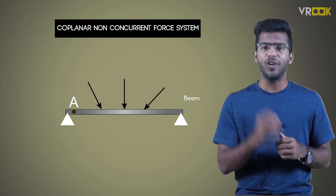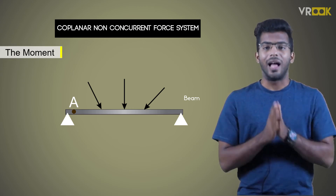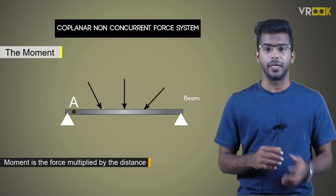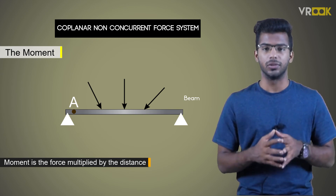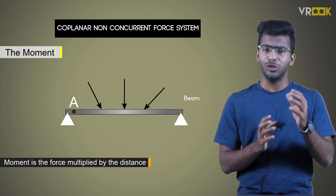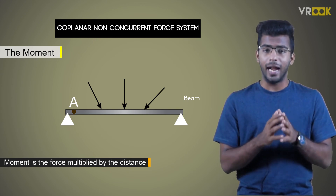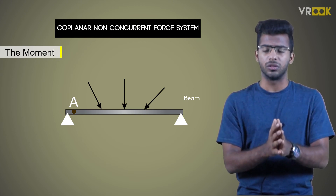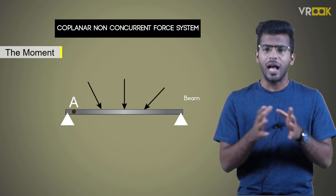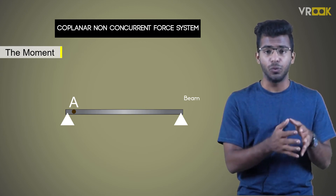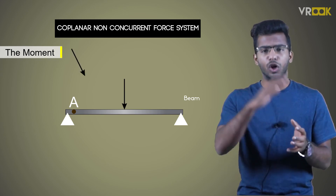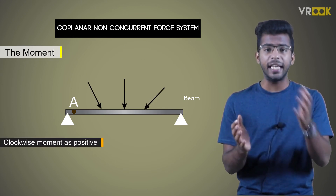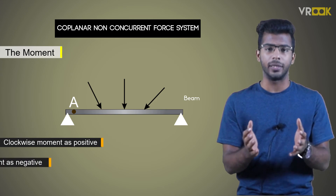So we add one more term: the moment. As we know, moment is the force multiplied by the distance. We consider a point on the object and calculate the moment of all the forces about that point. As in the case of forces, we can consider clockwise moment as positive and anti-clockwise moment as negative.